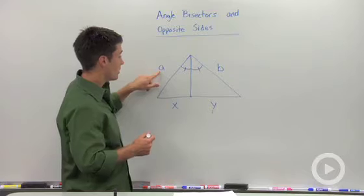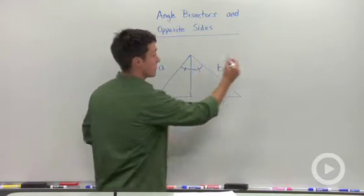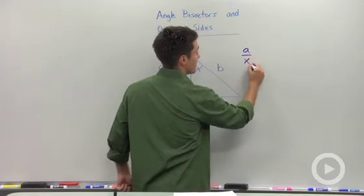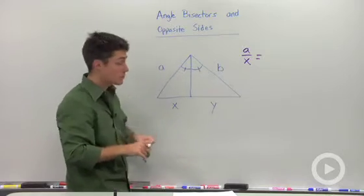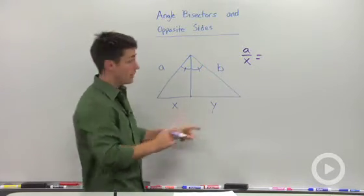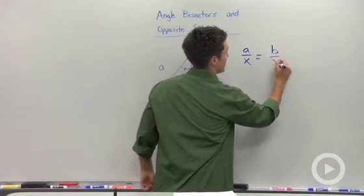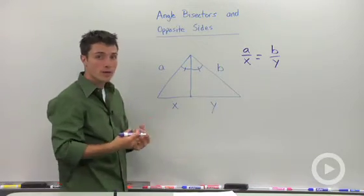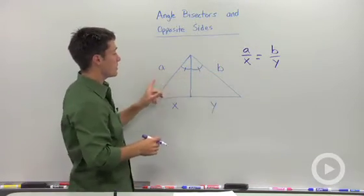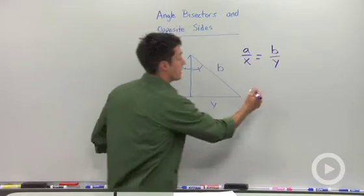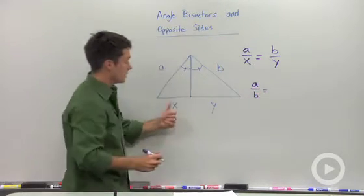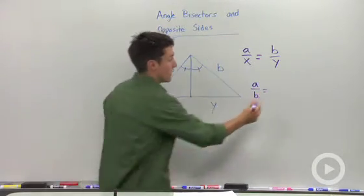I can say that the ratio of A to X has to be equal to the ratio of B to Y. Another way of looking at it is: what's the relationship between A and B? I can say that A goes to B the way X goes to Y.